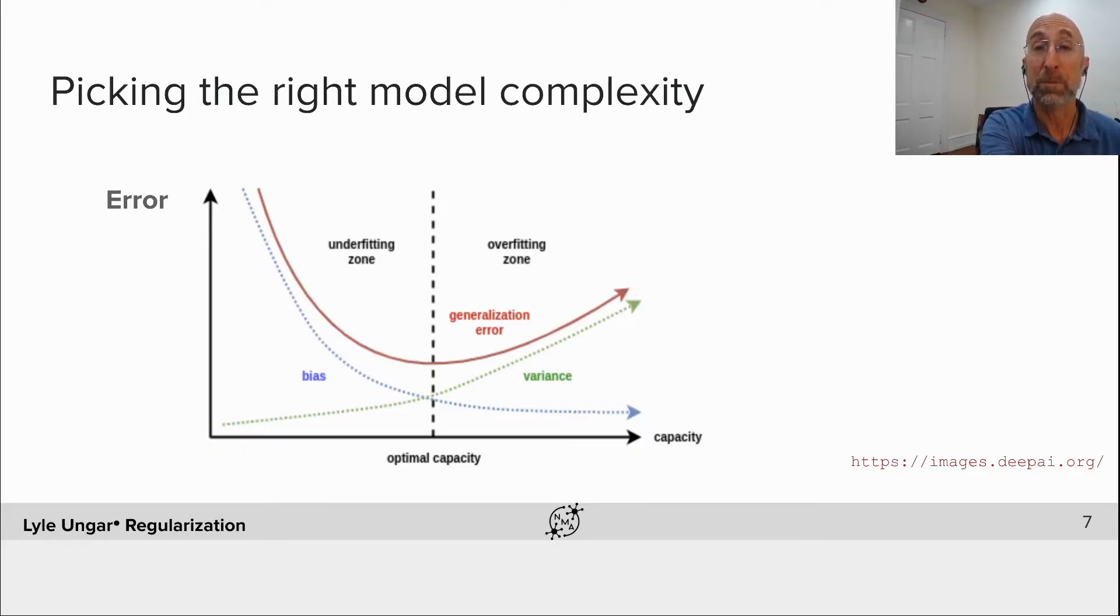It can fit at first more and more signal, then more and more noise. The bias, the error on the training set, goes down, down, down. The variance, the variation from test set to test set, that goes up, up, up. And what we care about, the generalization error, this red curve goes down at first and then up. Our goal is to pick the right amount of complexity that gives us the best generalization.